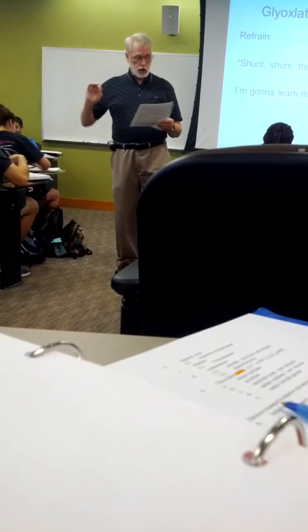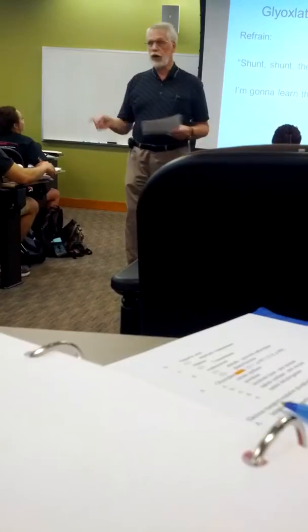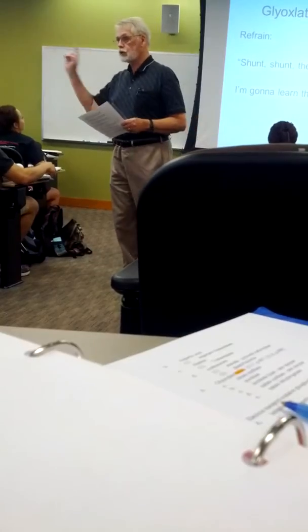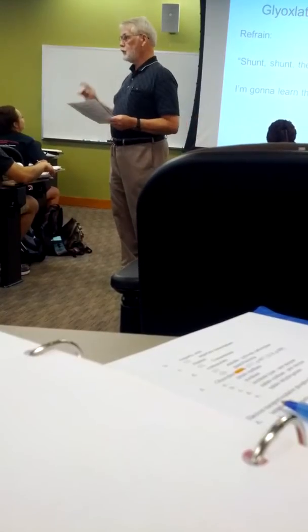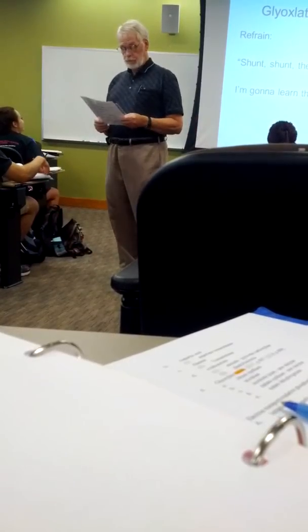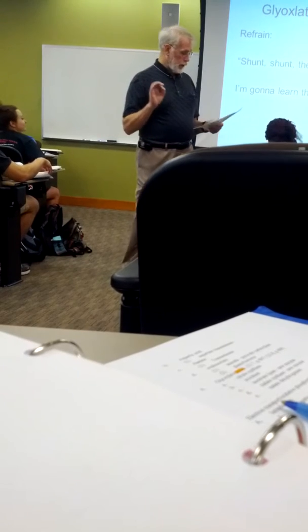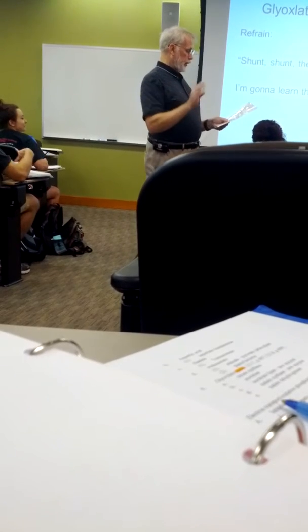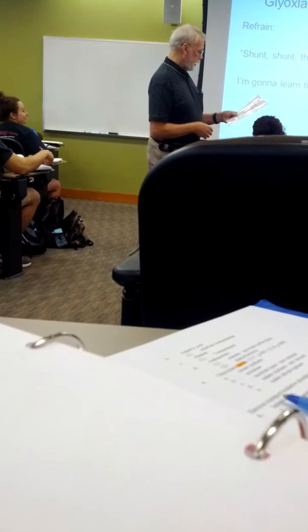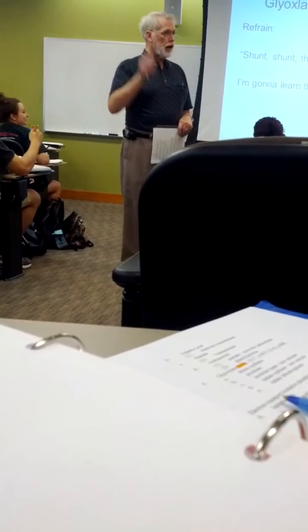Acetyl-CoA comes in to find OAA is right behind. Shunt, shunt, the glyoxylate shunt. I'm going to learn the glyoxylate shunt. They are put together, mighty fine. Now citric acid is on the line.